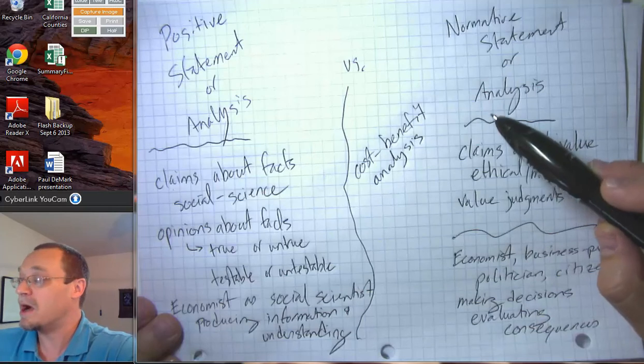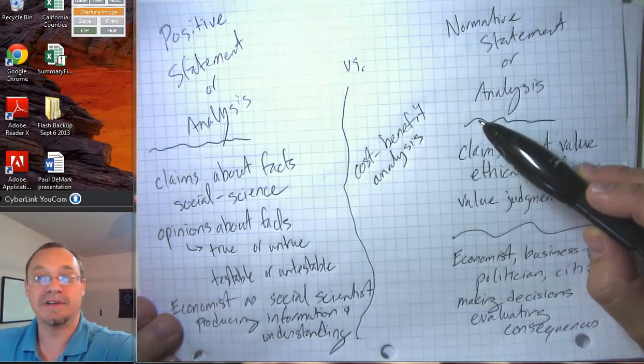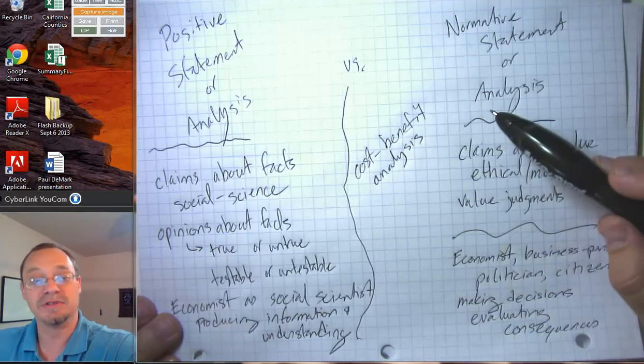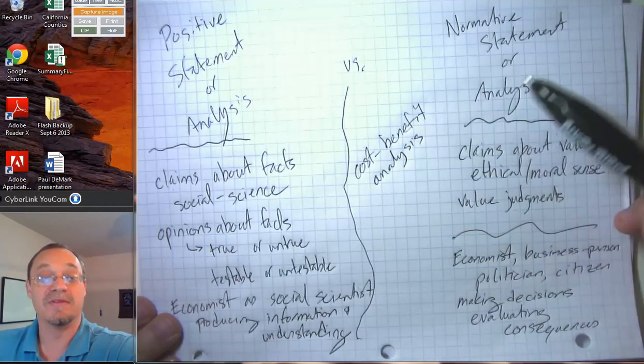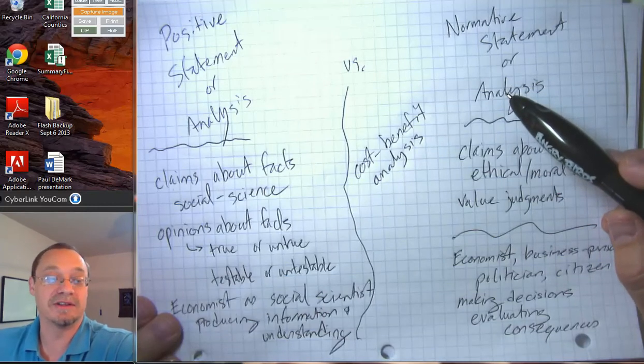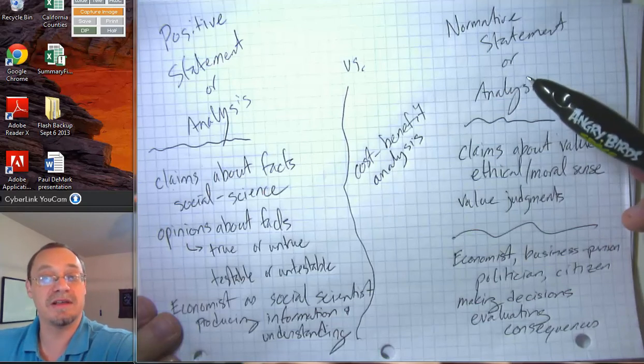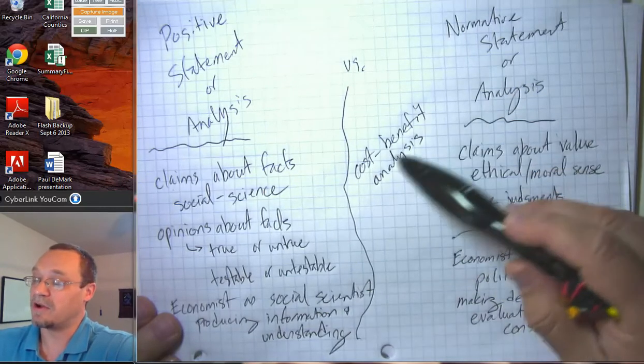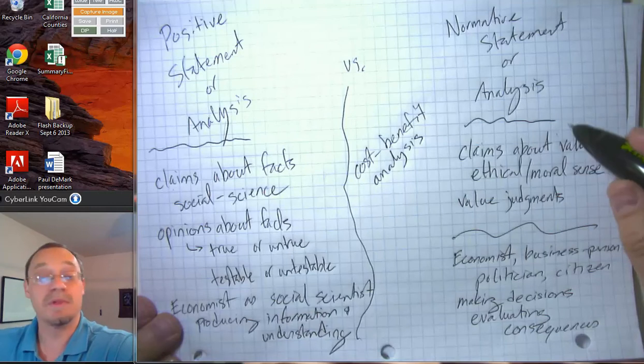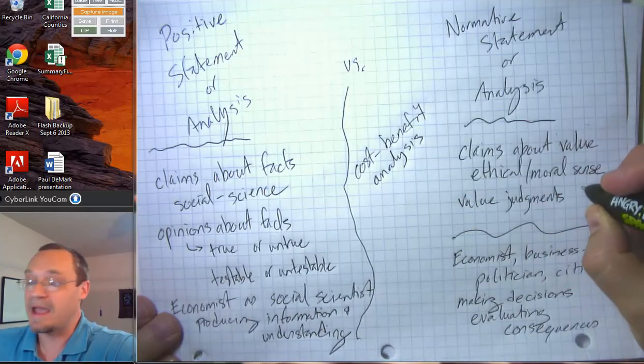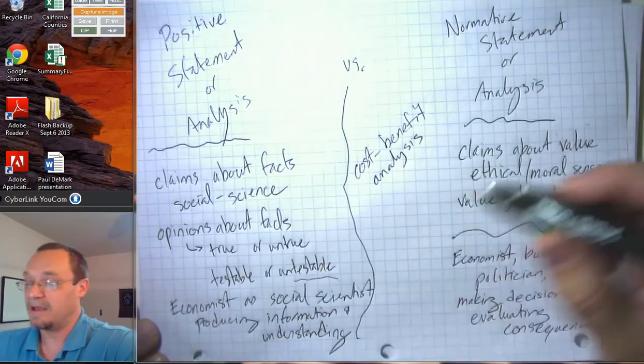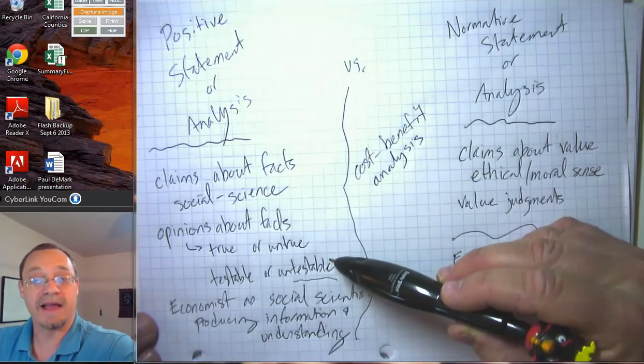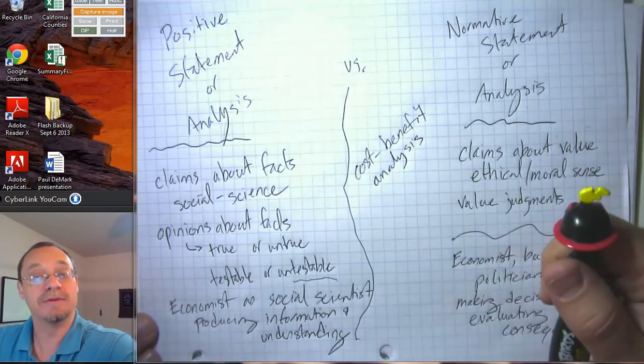Those are all things that we have to decide how to measure. How do we measure the impact on animals? Or aesthetics? How do we measure all of these costs and benefits is a deeply normative value judgment that we have to engage in. You can to some degree sit in an office and try to come up with facts. But once you go to act in the world, you have to engage in normative analysis.